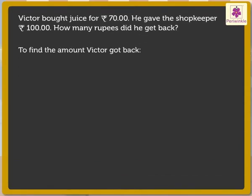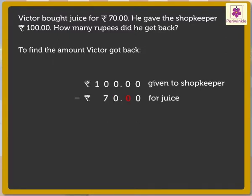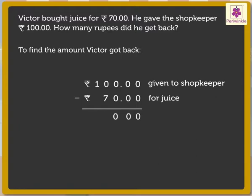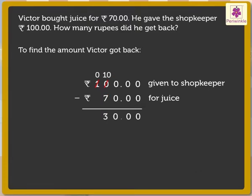To find the answer, we have to subtract 70.00 from 100.00. So 0 minus 0 is equal to 0, 0 minus 0 is equal to 0, 0 minus 0 is equal to 0. Now we cannot subtract 7 from 0, so we regroup. Now subtract 7 from 10 to get 3. Again, put the dot below the dots of the subtracted numbers.